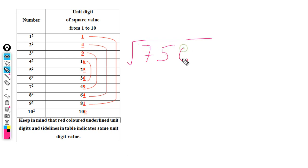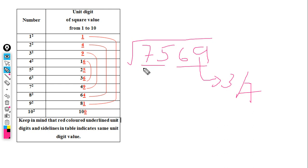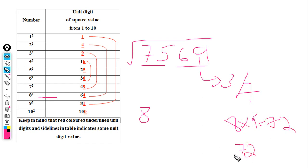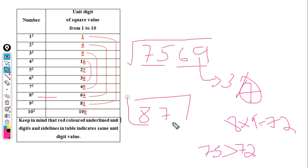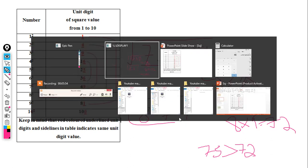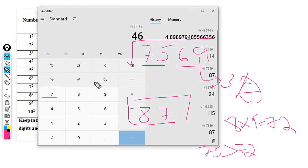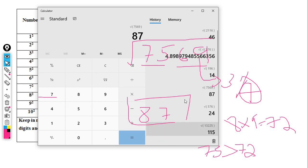Let's take the example of 7569. The unit digit is 9, which comes from 3² and 7², so the answer ends in 3 or 7. The remaining part is 75, which is nearest to 8² = 64, so 8 is the base. Multiply the next number: 8 × 9 = 72. Since 72 is less than the given number 75, we take the greater unit digit — 7. The answer is 87. Calculator confirms: square root of 7569 is 87. Correct!